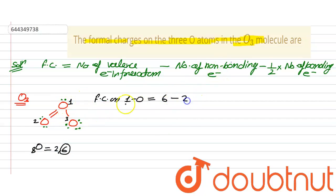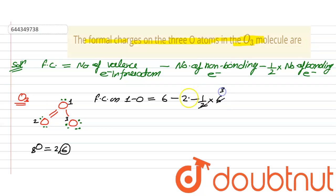The non-bonding electrons on the first oxygen are 2. The bonding electrons are 6 (three bonds × 2). So: 6 − 2 − (½ × 6) = 6 − 2 − 3 = +1. The formal charge on the first oxygen is +1.